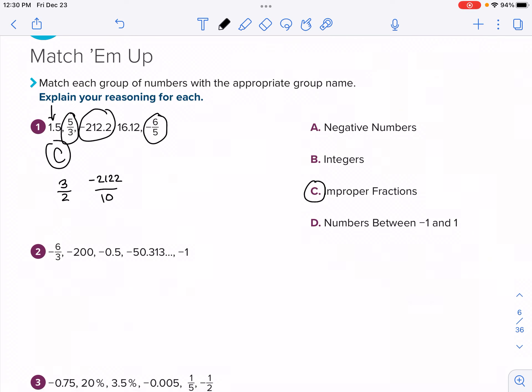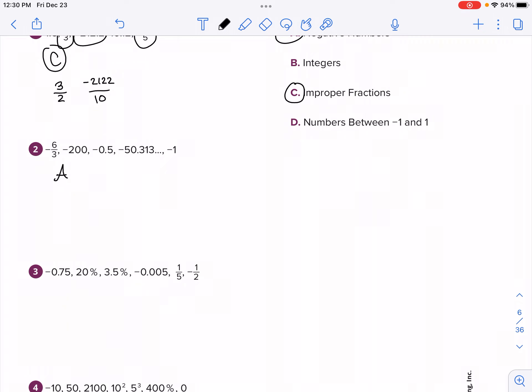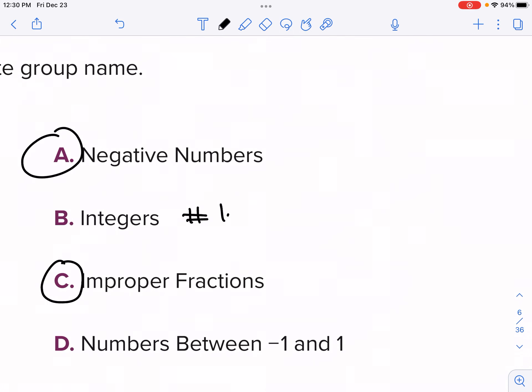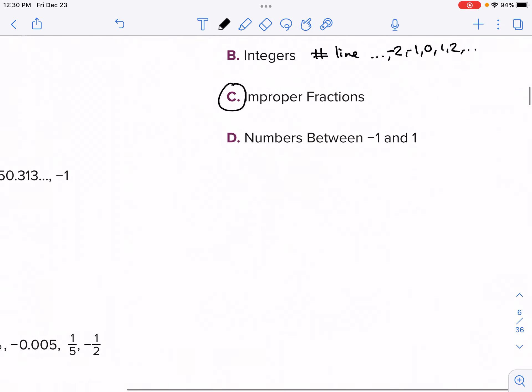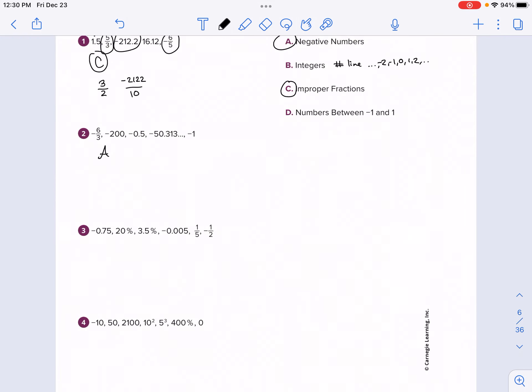Number two, what do they all have in common? They are all negative. Not too much explanation there. And then we have integers and numbers between negative one and one. I'm just going to describe integers though. This is like a number line, all the numbers on a number line like this: negative two, negative one, zero, one, and two. And it continues in both directions. That's what it means to be an integer, positive and negative whole numbers, including zero. This number three are D numbers between negative one and one.